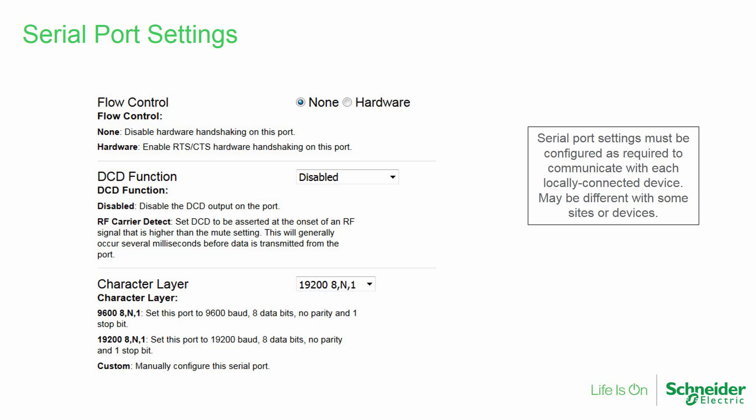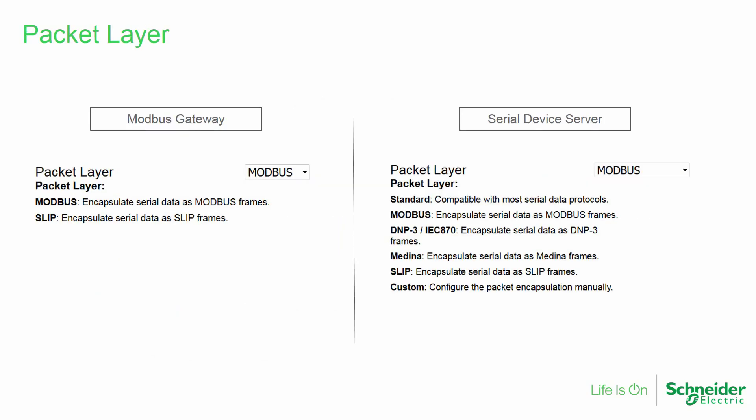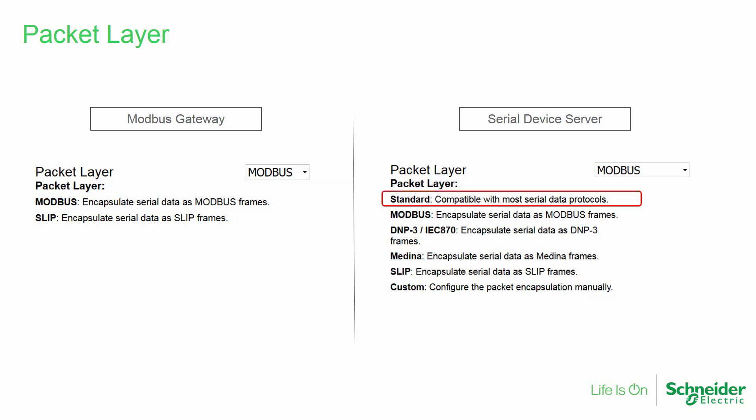Scrolling further down the COM1 setup page, we find serial port settings. These must be configured as required to communicate with each locally connected device, and may be different at each site, with each device possibly having unique requirements. The packet layer options will change when the serial port mode is selected. Modbus gateway mode provides only two options: Modbus, for transport specifically of Modbus messages, and SLIP, to provide the ability to transport serial diagnostic and programming messages generated by TRIO's T-View Plus management suite for TRIO's serial-only radios.